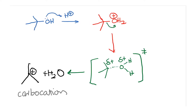One way to understand the Hammond postulate is to look at the formation of a carbocation during an SN1 or E1 reaction. The first step in the formation of a carbocation — for example, from a tertiary butyl alcohol — is that the hydroxyl group gets protonated. Once protonated, you form an intermediate, and this process is reversible. The protonated alcohol can then lose water to generate a carbocation.